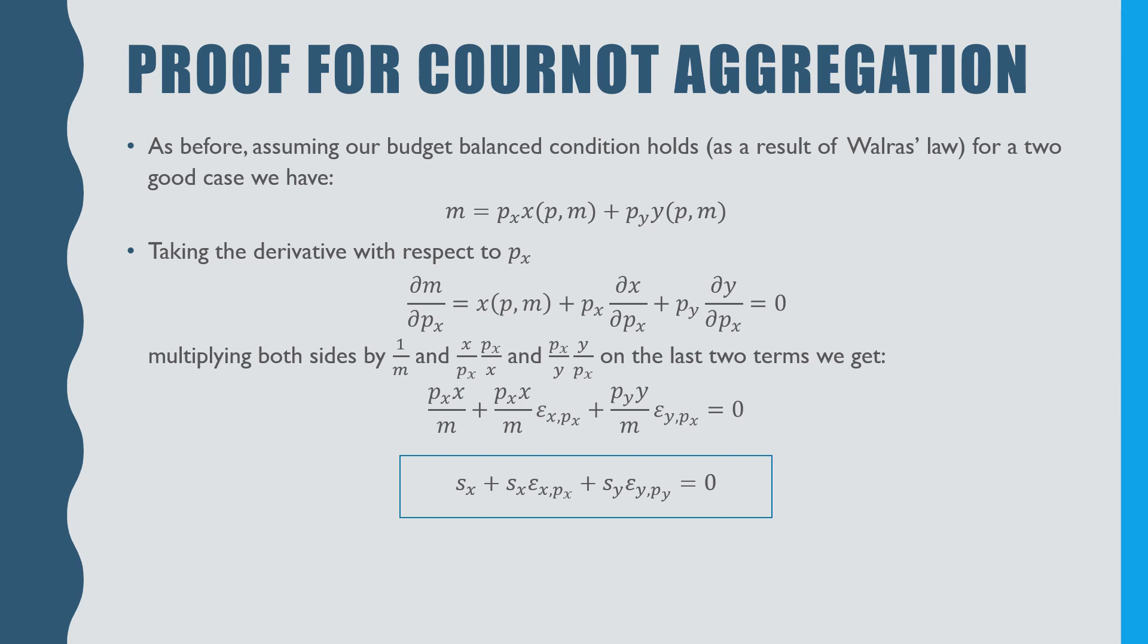Taking the derivative with respect to the price of good X, we get the following. Let's multiply now both sides by 1 over M, and X all over the price of good X times PX over X, which is the same thing as multiplying by 1, and PX all over good Y times Y all over the price of good X.